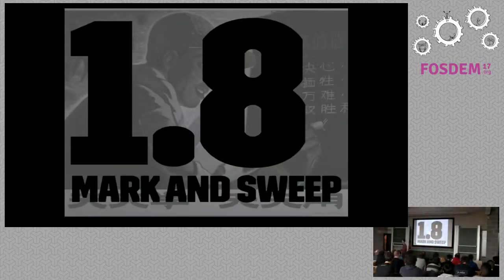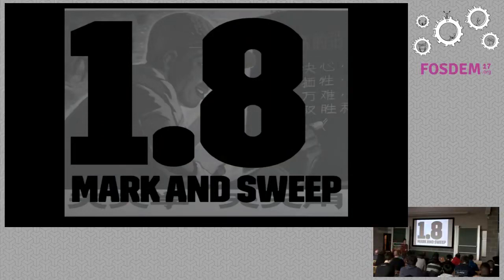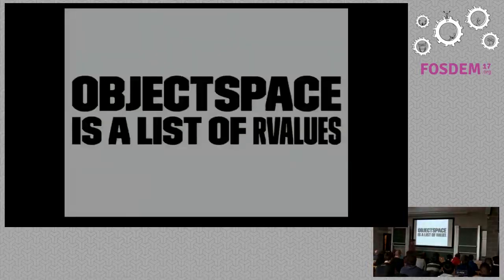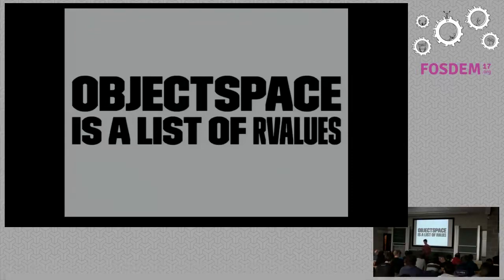Let's start with 1.8, which as far as I know, from Ruby's inception, employed a mark and sweep garbage collection algorithm — the simplest possible GC algorithm. To talk about how mark and sweep works, I need to explain how Ruby organizes memory. Ruby objects are organized in something called the object space. R-values are the C structures that hold Ruby objects — they're 40 bytes and contain some information about each Ruby object.